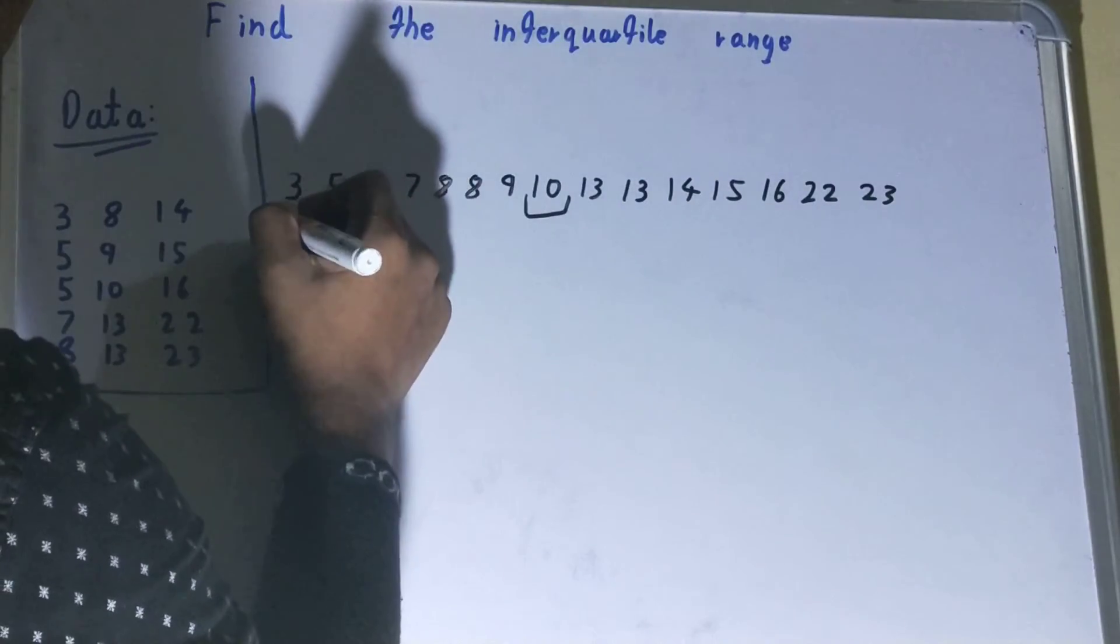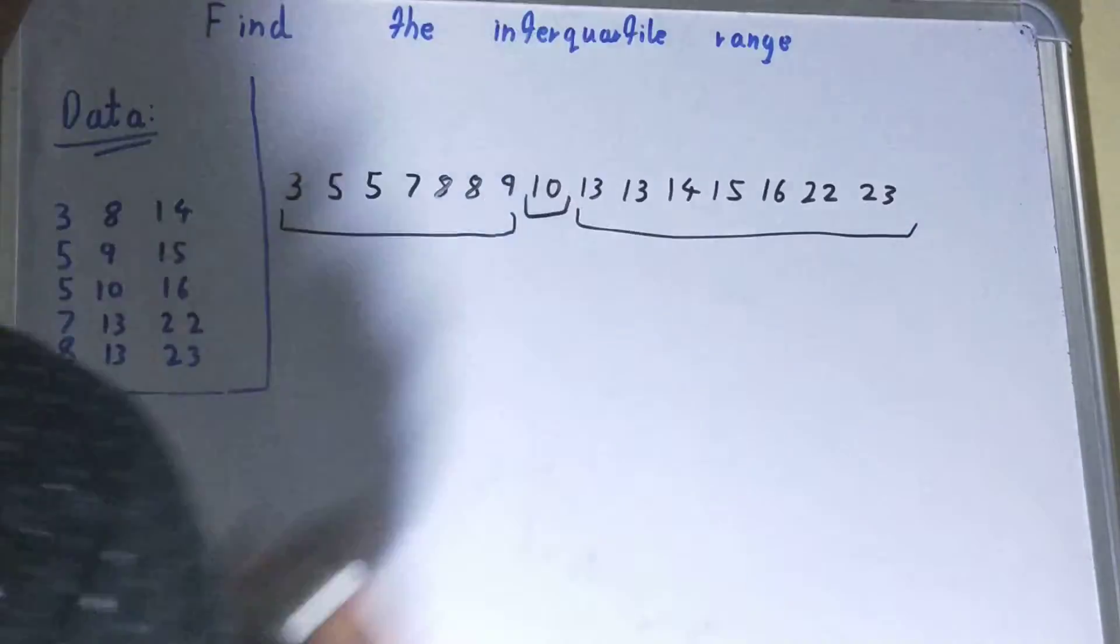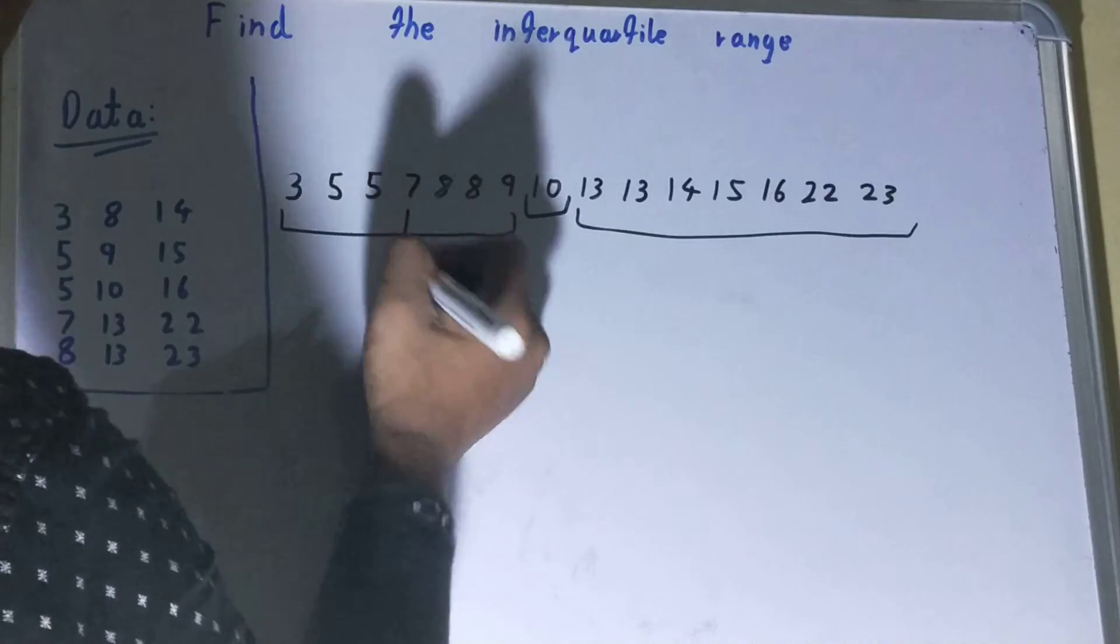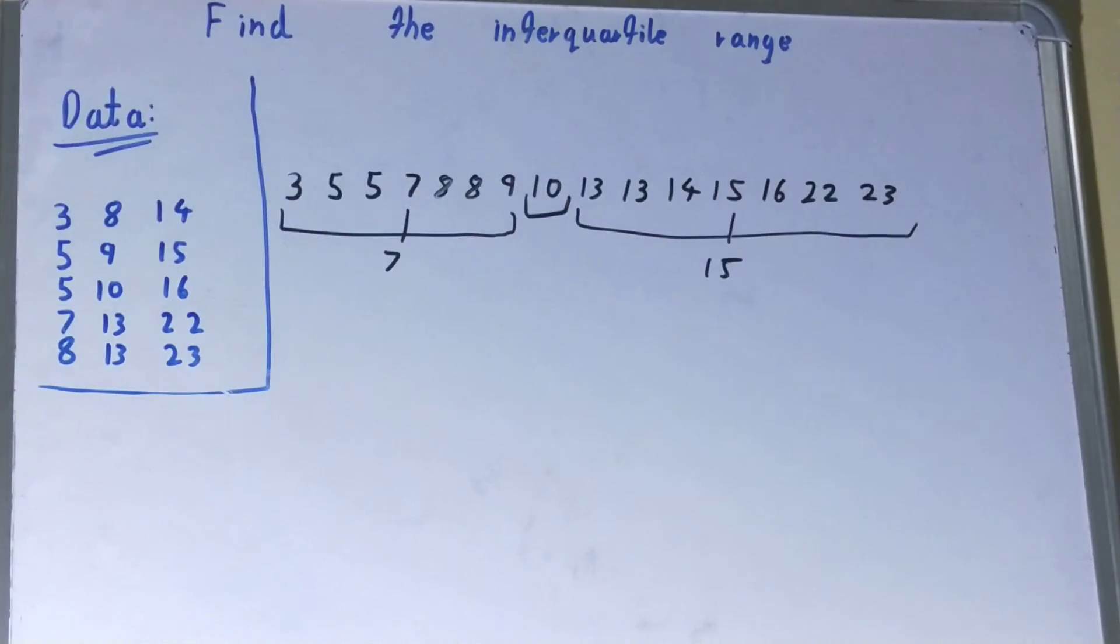So we will find mean for this lower half and the upper half as well. For the lower half it will be 7, for the upper half it will be 15. The process is very simple.